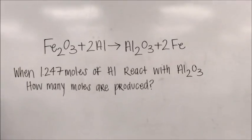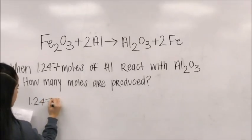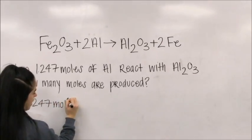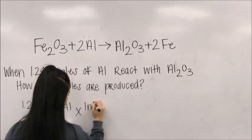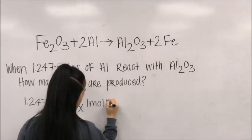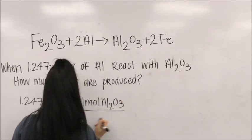You'll have to take 1.24 moles of Al times 1 mole of Al2O3 over 2 moles of Al